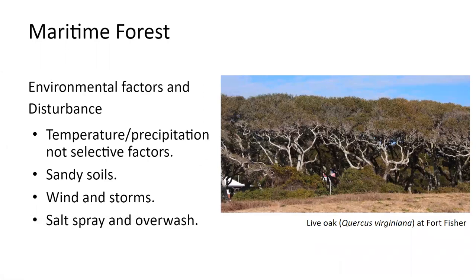Disturbance is a really important component of maritime forests. If you look at a temperature and precipitation map for the southeastern coastal plain, you won't see a lot of variation — it's other factors that really drive why these forest types occur. Maritime forests importantly have sandy soils. Sandy soils are prone to drought since they're very well drained, so species need to tolerate drought. They also have to tolerate wind, storms, salt spray, and overwash.